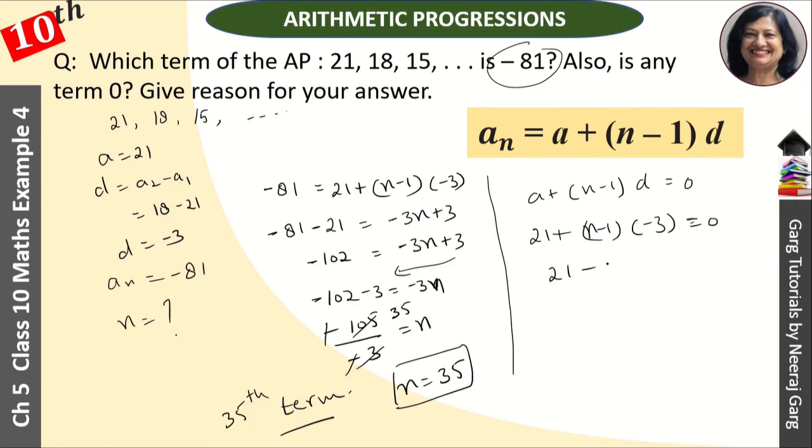So 21 minus 3n plus 3 = 0. Minus 3n plus 24 = 0. Minus 3n = minus 24. Then n = minus 24 divided by minus 3, which equals 8. When n = 8, it means the eighth term is zero.